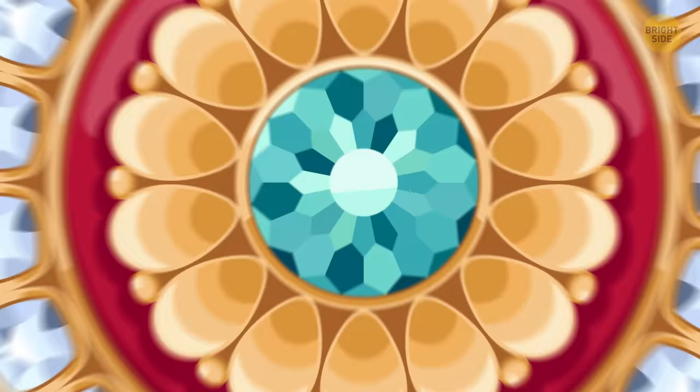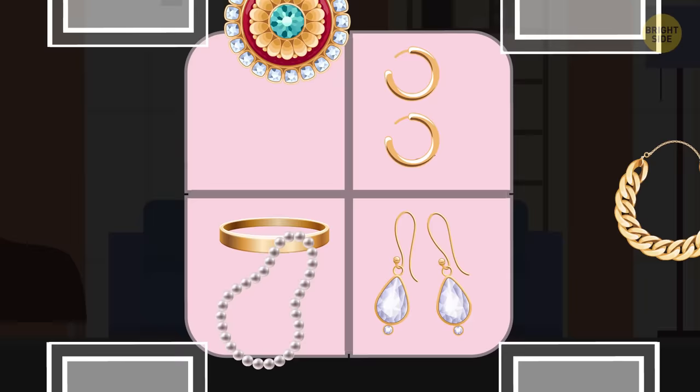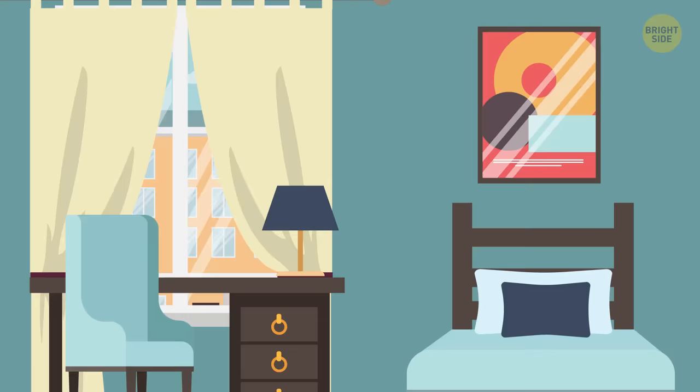As for earrings, rings, and small dainty pieces, use a pillbox to organize and keep them secure in your suitcase. Throw some hair ties in there too. Might need one for your flip-flops, right?